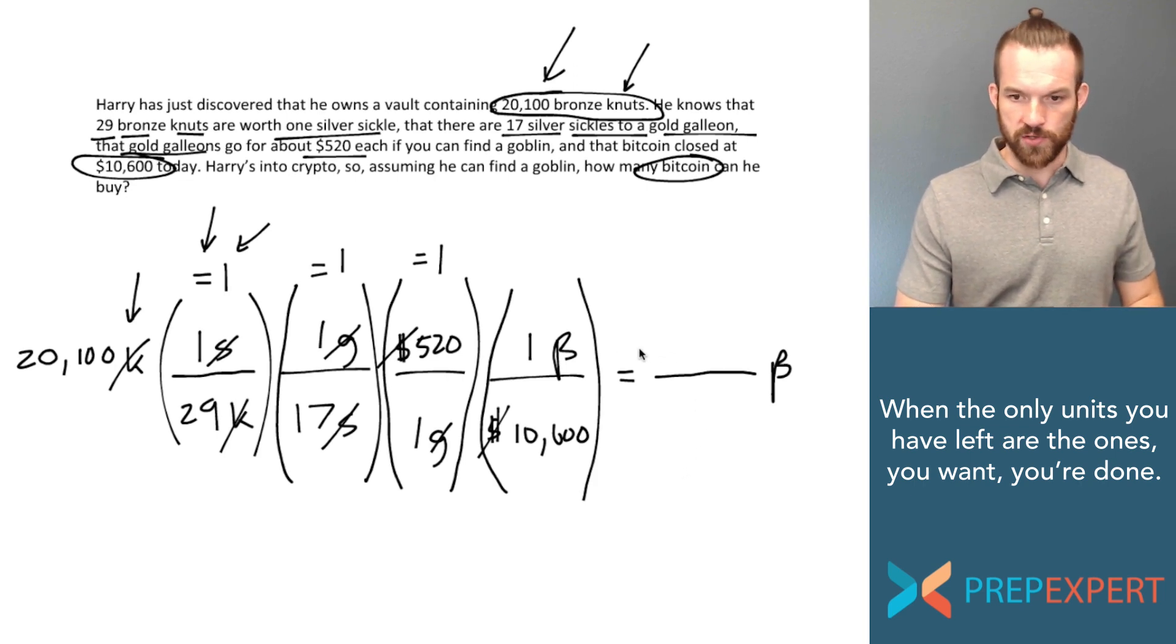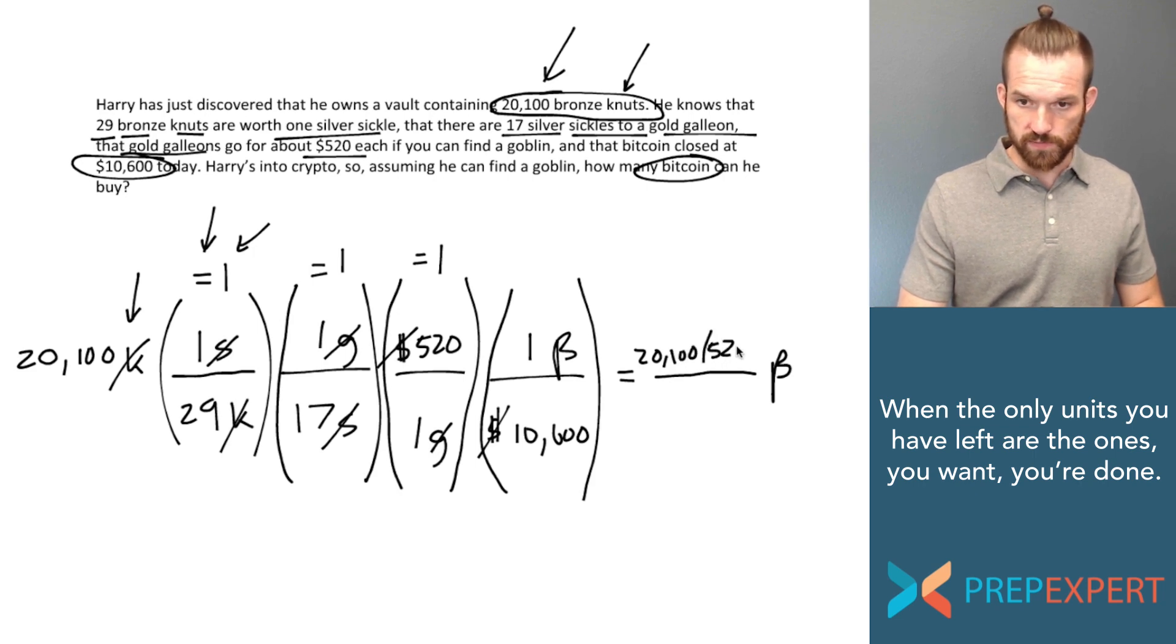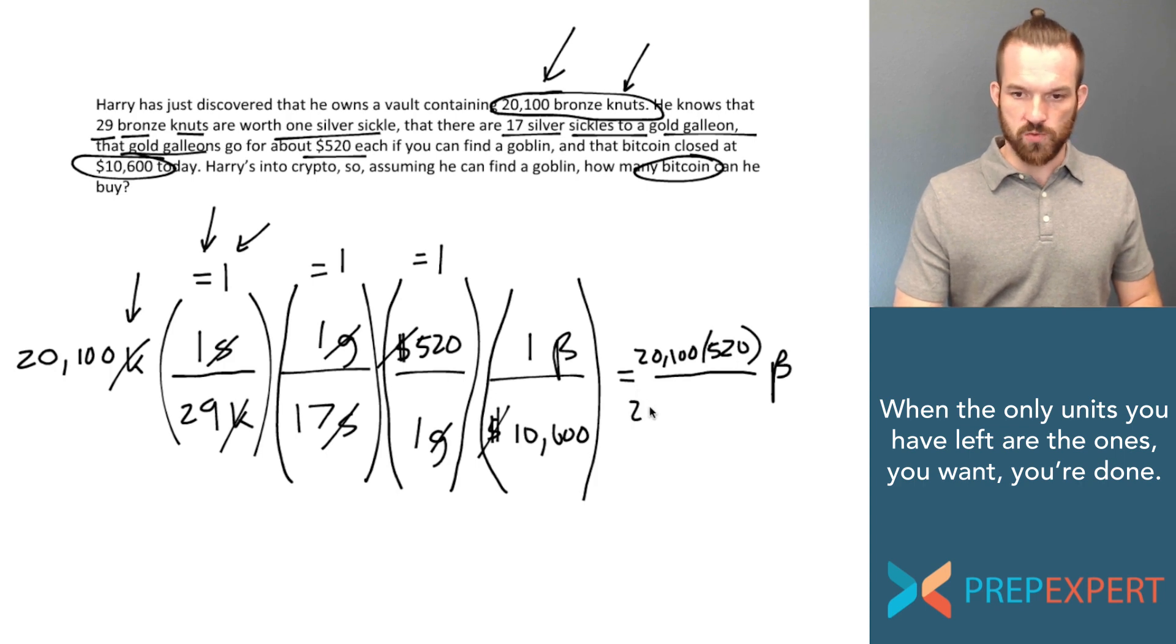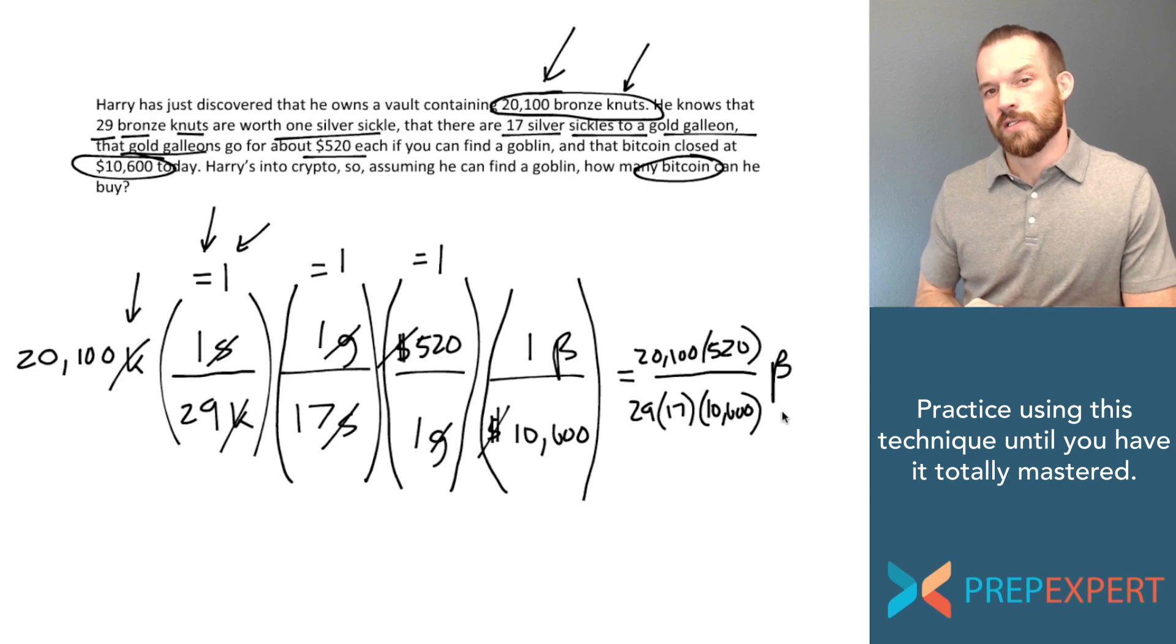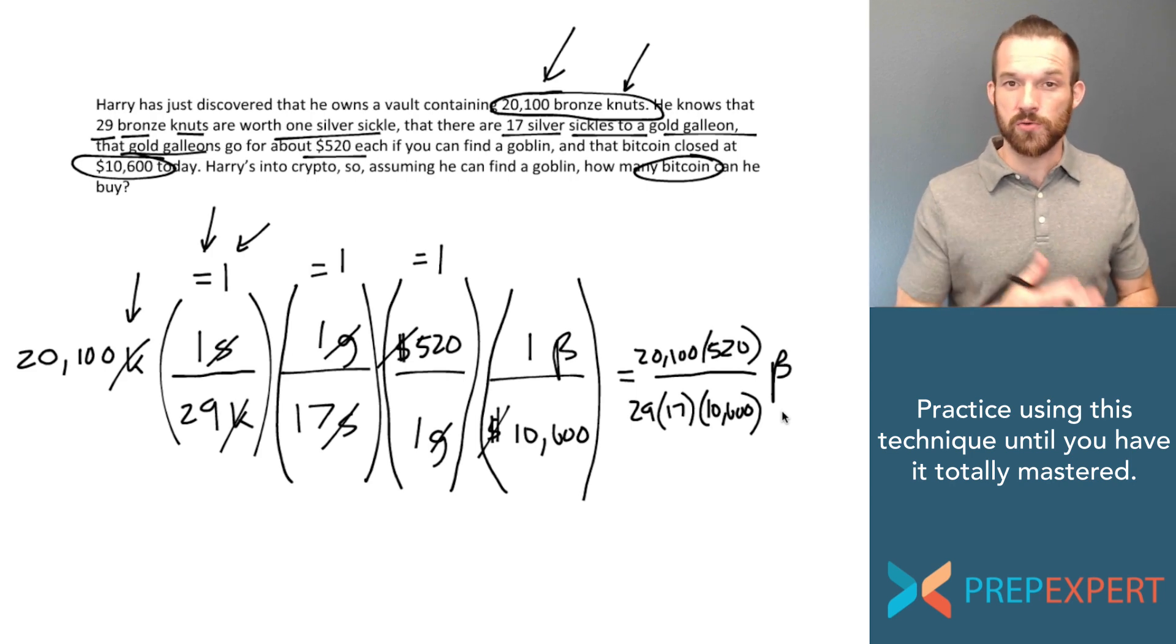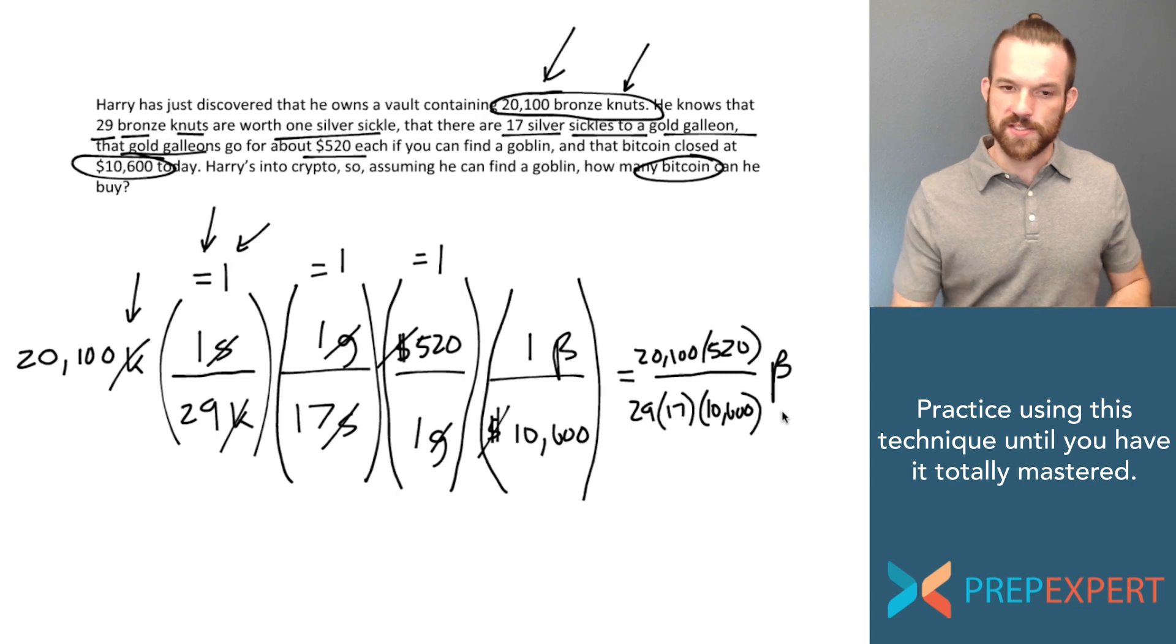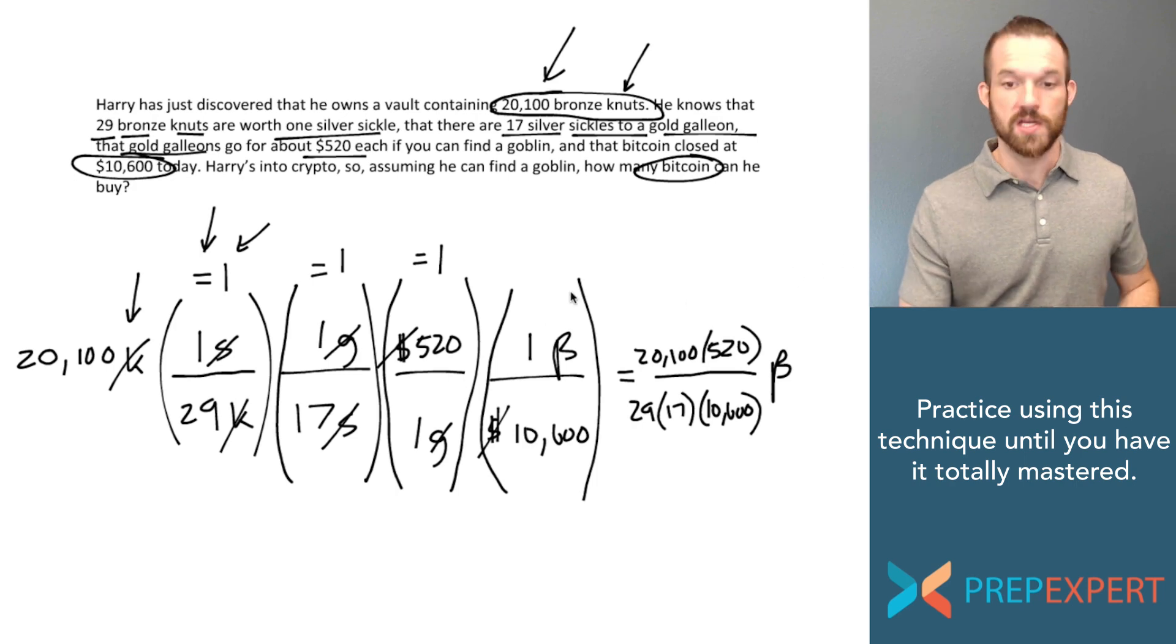So what does it look like when I do the math? Well in the numerator I've got 20,100 times 520. And in the denominator I've got 29 times 17 times 10,600. Now note I left all of the math until the end here. I purposefully didn't do any of the math until I had my units completely worked out. Why is that? Because the math doesn't matter until you get the units right. Once I've gotten my units sorted out then I'll worry about the math.